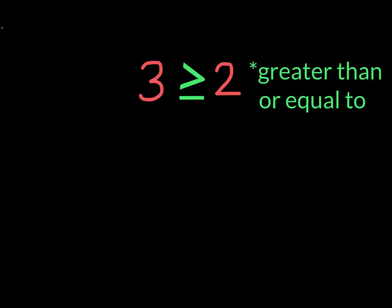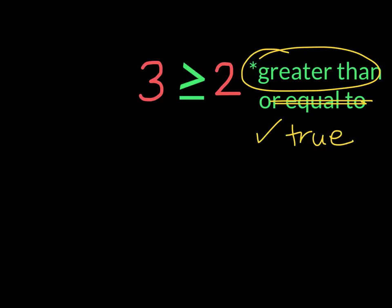This would be read as three is greater than or equal to two. Well, three is greater than two, but it is not equal to two. Remember, all we need is for one of these to apply to our math sentence so that it will be considered to be true.